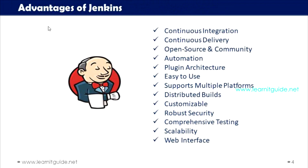Jenkins is also customizable — it allows you to define and configure build and deployment pipelines as code using Jenkins files or pipeline DSL, so you can meet your specific project requirements. It also has robust security: Jenkins offers security features to protect your CI/CD pipelines and sensitive data. It supports user authentication, role-based access controls, and integration with external security systems, ensuring that the CI/CD process remains secure. Additionally, Jenkins provides comprehensive testing — it integrates seamlessly with various testing tools and frameworks, allowing you to perform a wide range of tests including unit tests, integration tests, and functional tests. This helps identify and fix issues early, ensuring software quality.